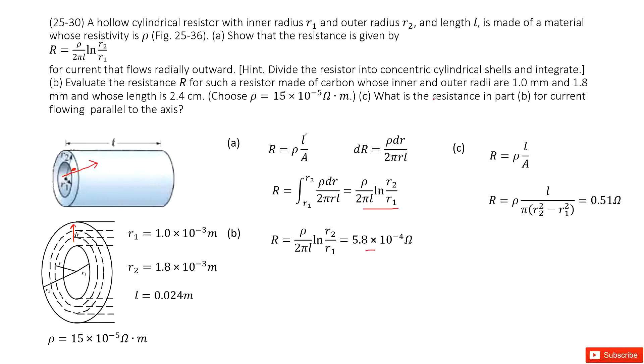The third one asks you, what is the resistance in part B for current flowing parallel to the axis? Now, current flowing parallel means the current goes this way.